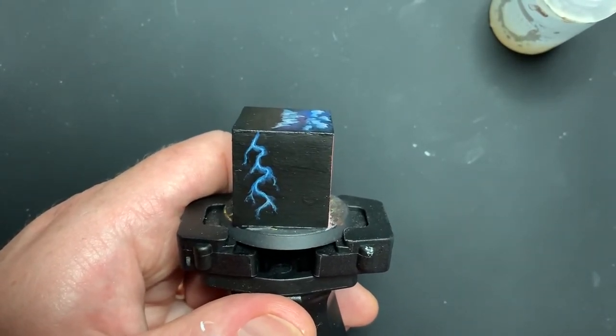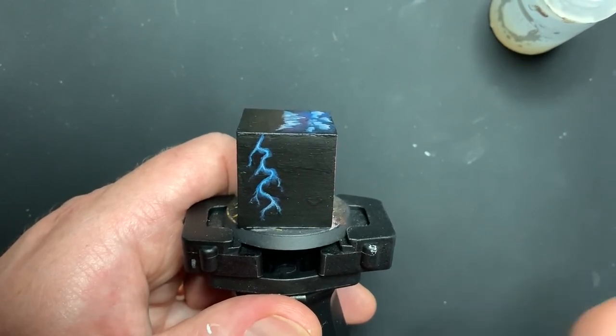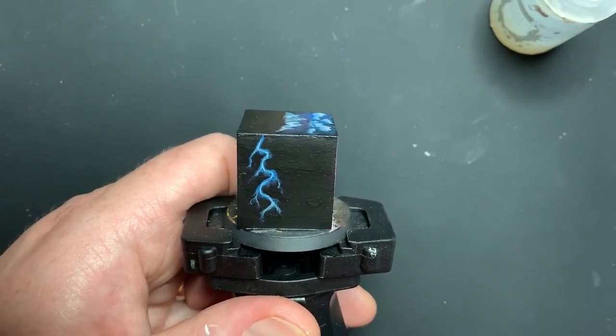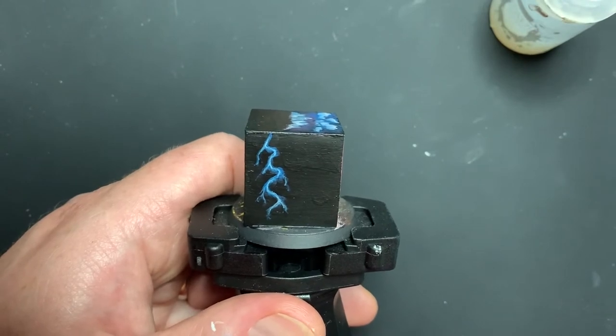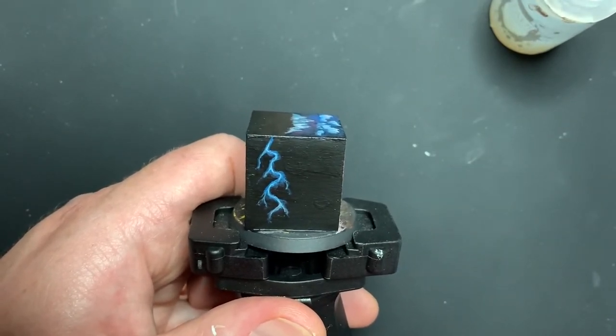Another thing you can do, which I'll show you, is if you're working over something like this, that's a black base coat, you can do your lightning bolts in white, and then hit them with a glaze and play with it.